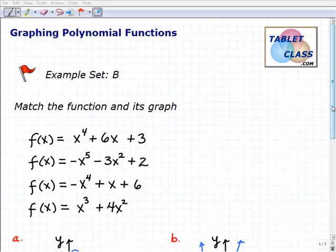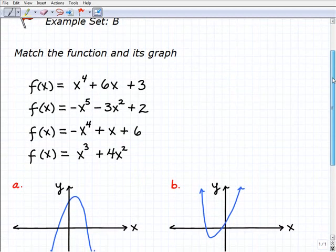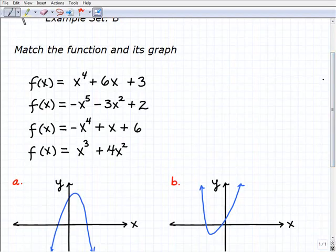Hello, welcome to the video on graphing polynomial functions. This is our second example set, example set B. And what we're going to be doing here is finding the graph or matching the graph that we're given for choices to these respective polynomials. And because we only have four different choices, we're going to use a basic process of elimination to answer this question, this exercise here.